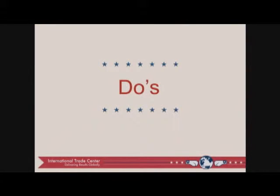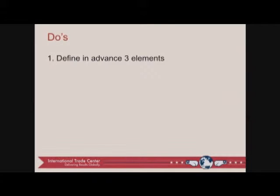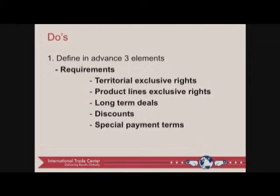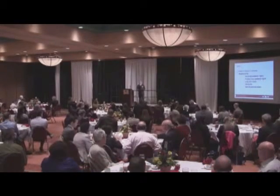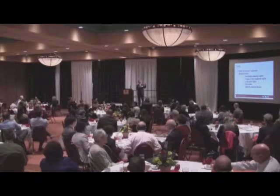Let's start with the do's. The first one is: define in advance three critical elements — define these before the negotiations. The first is to define the requirements. Requirements for what? Requirements to award the things that the prospect is going to ask for upfront. It's very important to start from the beginning defining all these — how are they going to acquire exclusive rights for each of these elements?